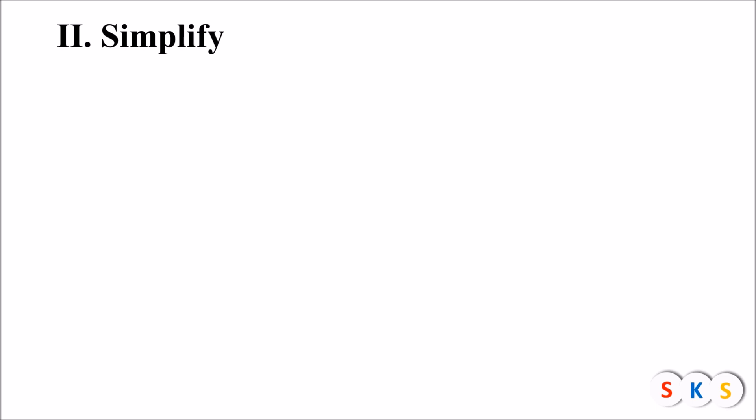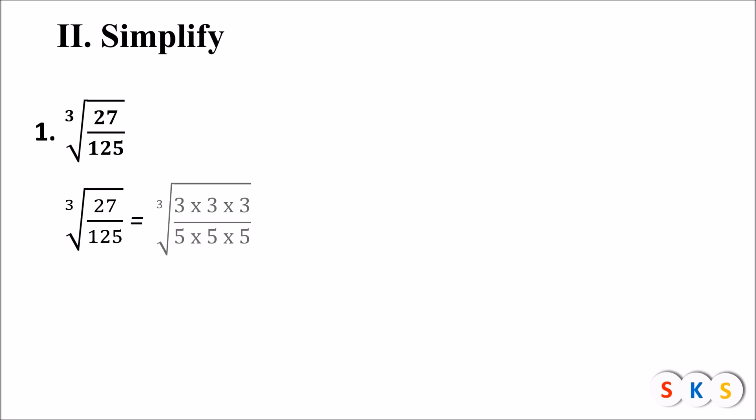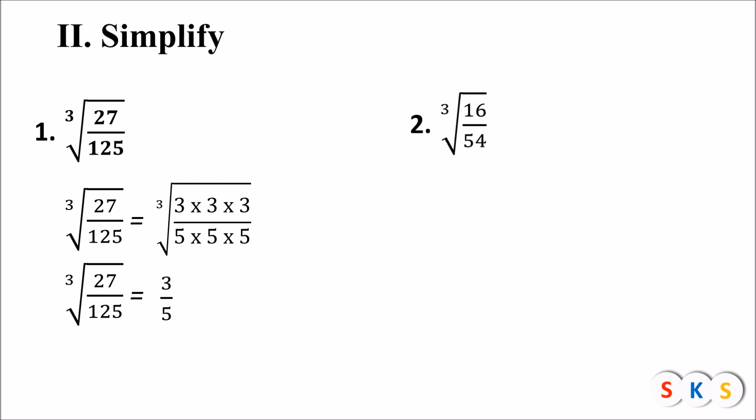Next, we simplify. The first question is: cube root of 27 upon 125. We find the prime factors of the numerator and denominator. 27 = 3 × 3 × 3 and 125 = 5 × 5 × 5. Making groups of three same numbers: numerator is a group of 3 and denominator is a group of 5. Therefore cube root of 27 upon 125 equals 3 upon 5.